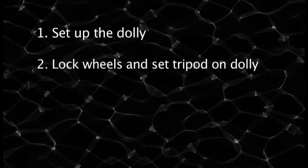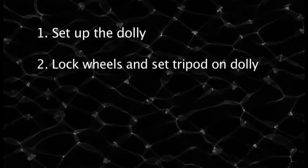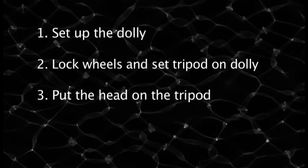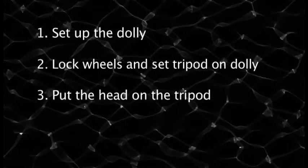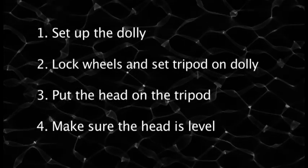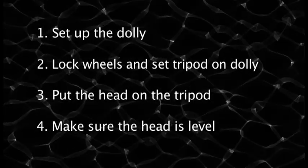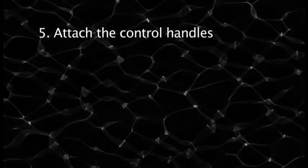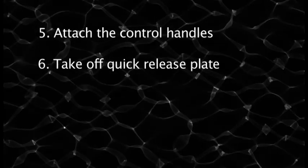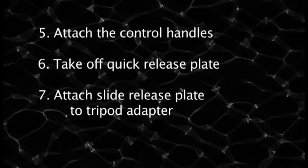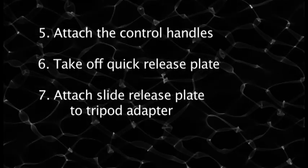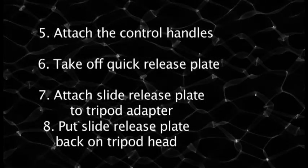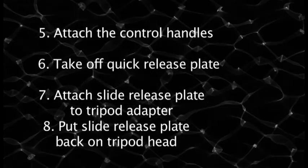Let's review. 1. Set up the dolly. 2. Lock the wheels and set the tripod on the dolly. 3. Put the head on the tripod. 4. Make sure the head is level. 5. Attach the control handles. 6. Take off the quick release plate. 7. Attach the slide release plate to the tripod adapter. 8. Put the slide release plate back on the tripod head.